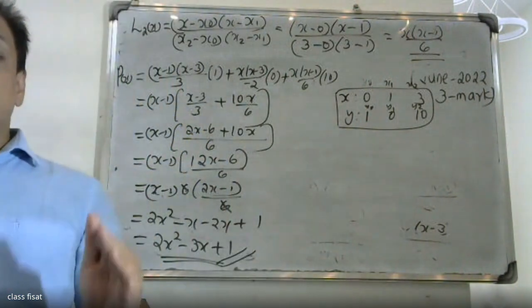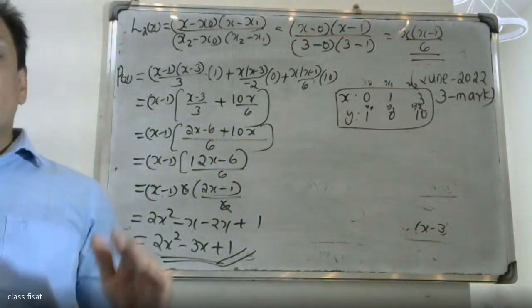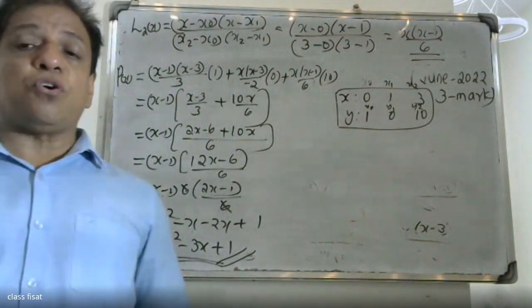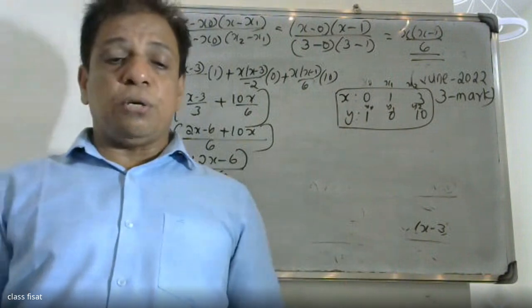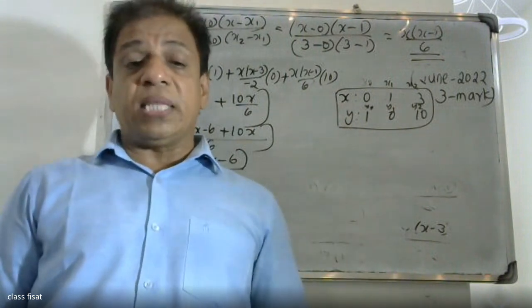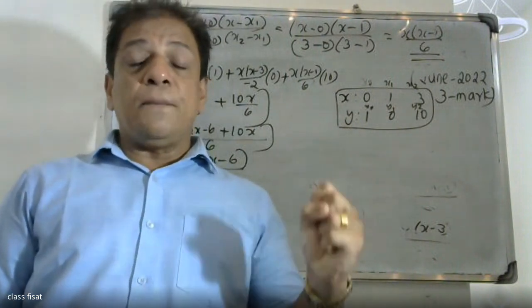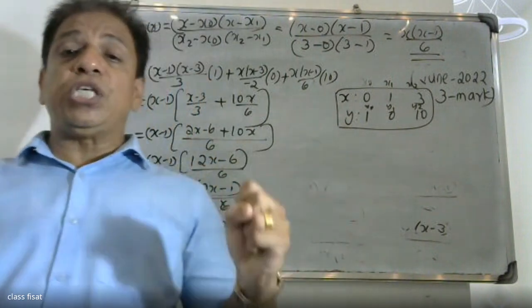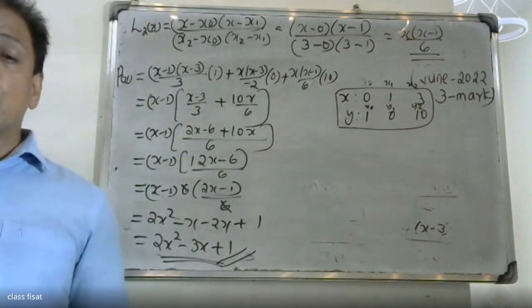This completes the Lagrangian Interpolation Formula problem. The Lagrangian Interpolation Formula gives P(x) as sigma i from 0 to n of L_i(x) times y_i.